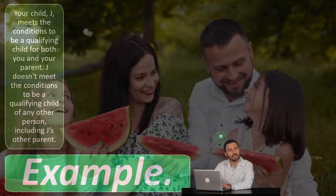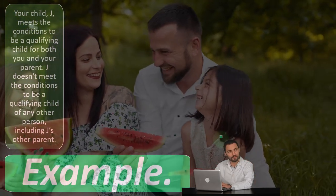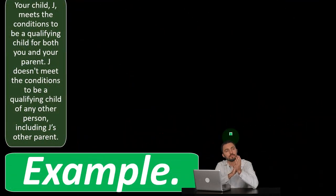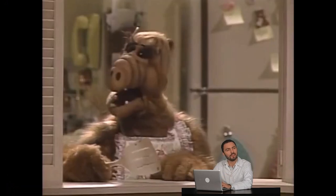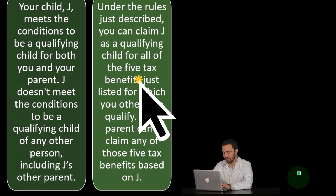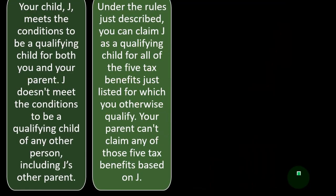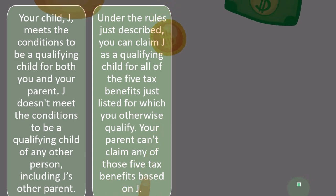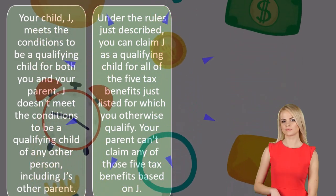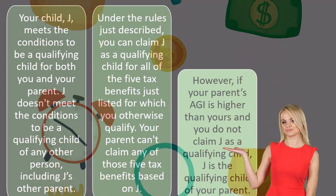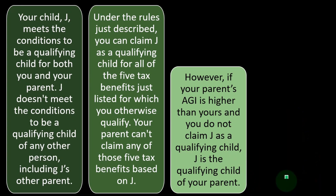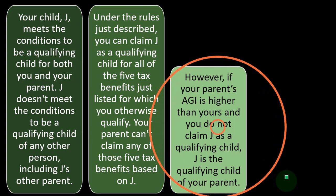Example: your child Jay meets the conditions to be a qualifying child for both you and your parent. Jay doesn't meet the conditions to be a qualifying child of any other person, including Jay's other parent. Under the rules just described, you can claim Jay as a qualifying child for all five tax benefits for which you otherwise qualify. Your parent can't claim any of those five tax benefits based on Jay. However, if your parent's AGI is higher than yours and you do not claim Jay as a qualifying child, Jay is the qualifying child of your parent.